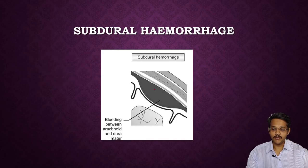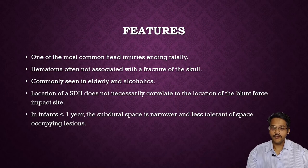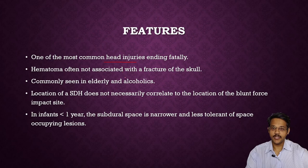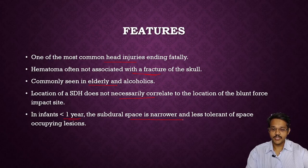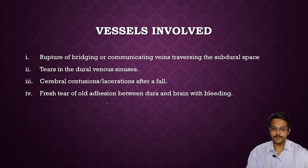The image shows subdural hemorrhage between the dura mater and the arachnoid mater. Subdural hemorrhage is the most common head injury ending fatally; hematoma is often associated with fracture of the skull and is commonly seen in the elderly and alcoholics. Location of subdural hemorrhage does not necessarily correlate with the location of the ground force trauma — it may be on the opposite side. In infants under one year, the subdural space is narrower and less tolerant.